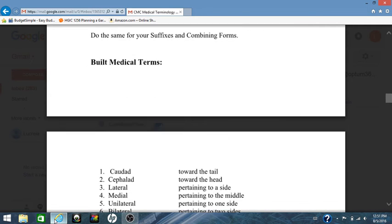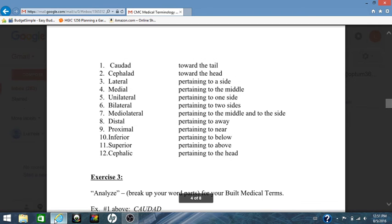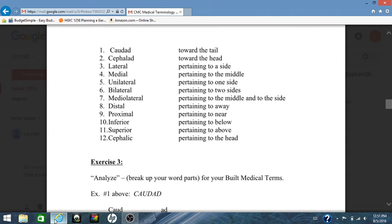Building your medical terms. Medical terms for unit 3. Caudad means toward the tail. Cephalad means toward the head. Lateral, pertaining to a side. Medial, pertaining to the middle. Unilateral, pertaining to one side. Bilateral, pertaining to two sides. Mediolateral, pertaining to the middle and to the side. Distal, pertaining to away.